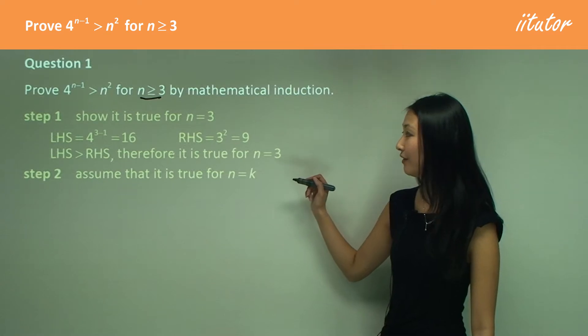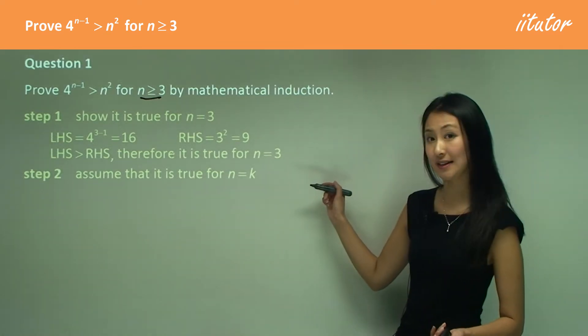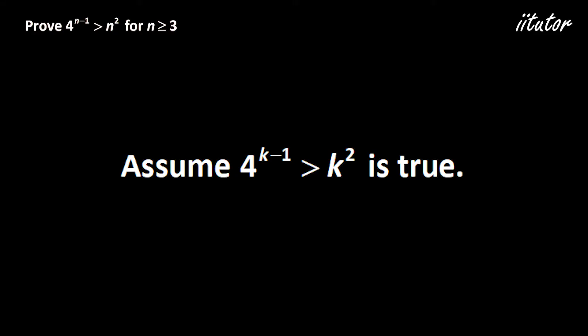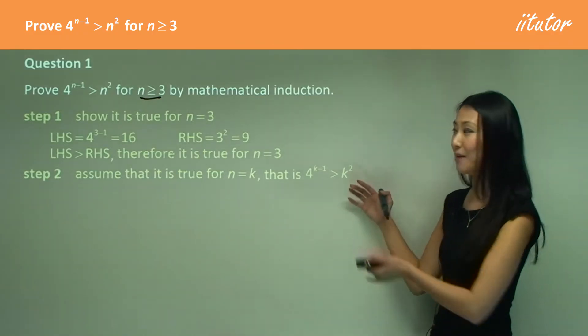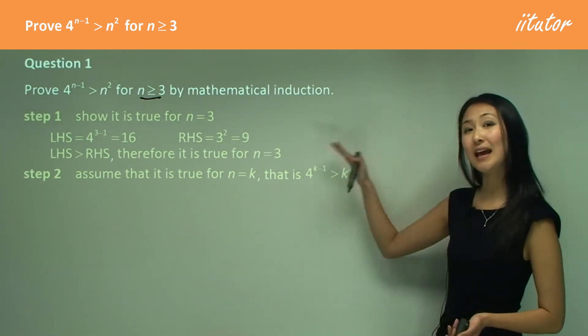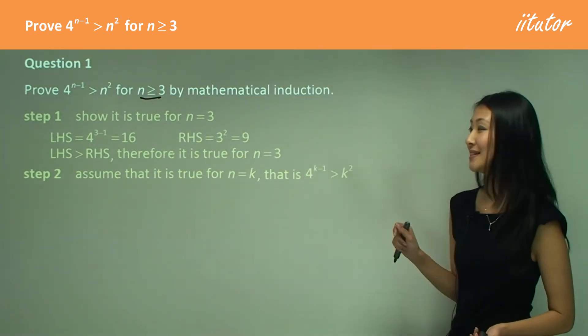In step two, we want to make the assumption that's true for n equals to k. And for inequalities, we just do what we normally do — just substitute in for k. So we assume that 4 to the power of k minus 1 is greater than k squared. As always, we do use this assumption in step three, so we want to keep our eye out for when we can use this assumption.